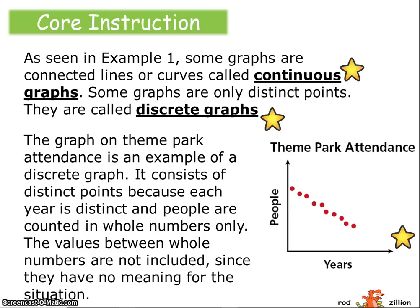The values between whole numbers are not included since they have no meaning for the situation. So there's only dots on this discrete graph. We're only talking about the very distinct points, not continuous, not the fractions and decimals that exist between those points, only those whole number points in this case.